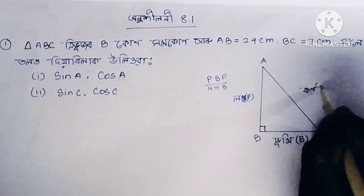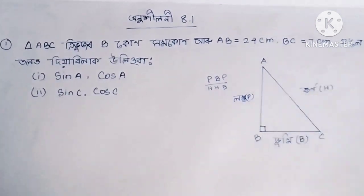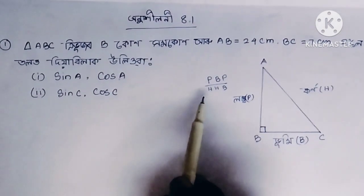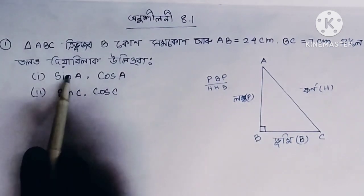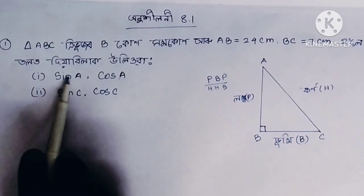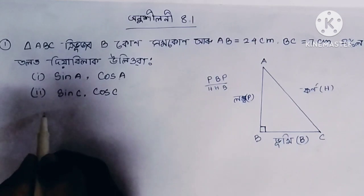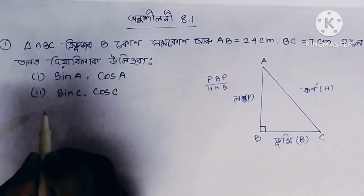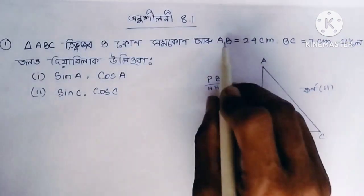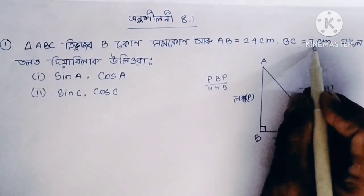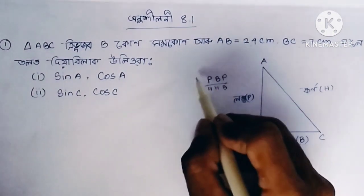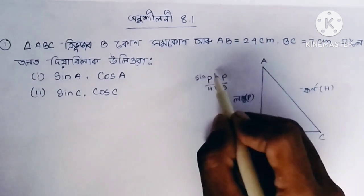From corner A, the edge — it is A. If the angle is 90 degrees, then sign (sine) is used. From that, AB equals 24 cm and BC equals 7 cm. We need to find sin, cos, and other ratios.